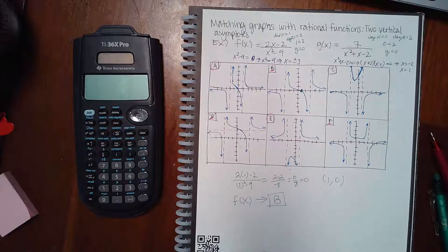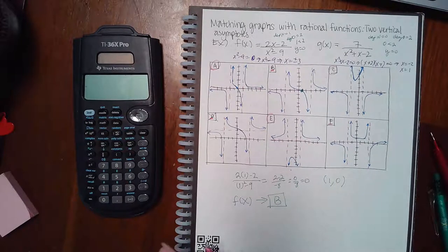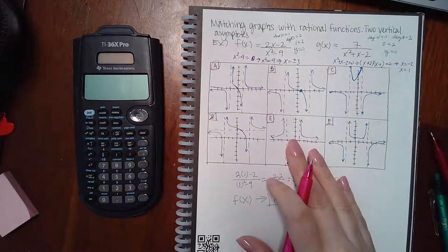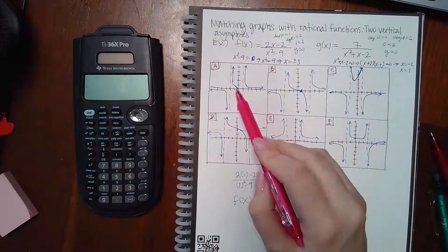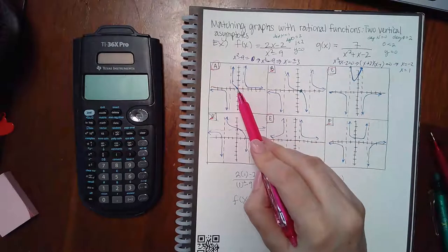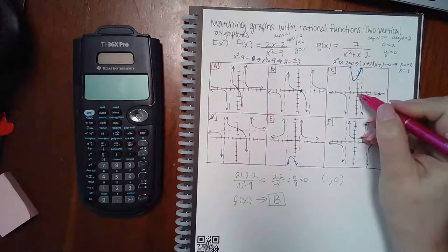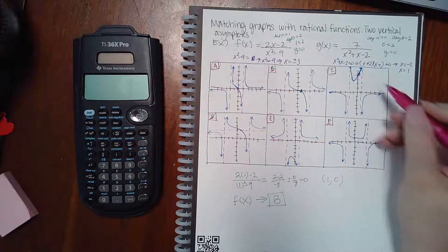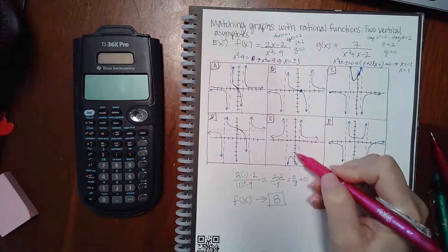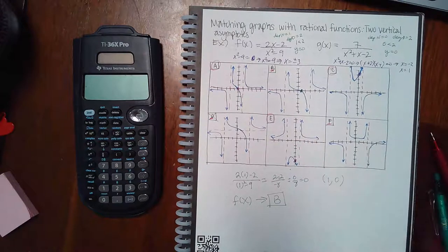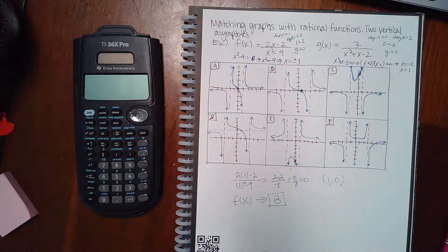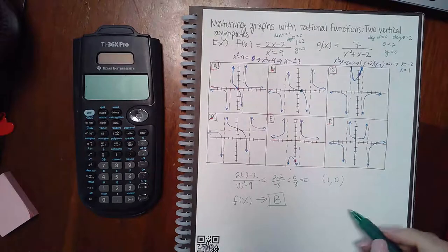Now we plug in some numbers to distinguish between A, C, and E. When you plug in x = 0 on A you get zero, on C you get a positive value, and on E you get a negative value. Let's plug x = 0 into g(x).